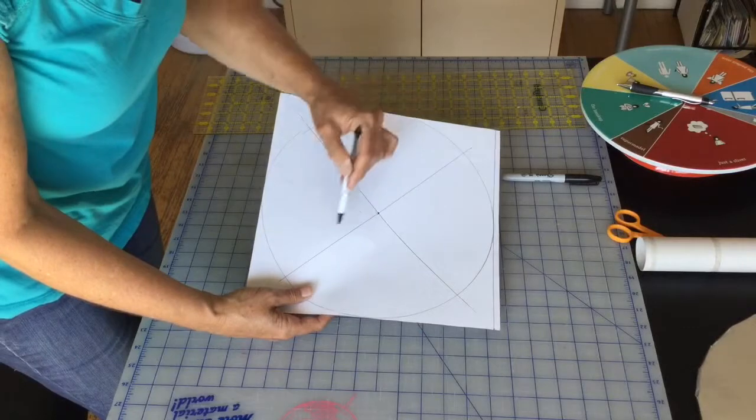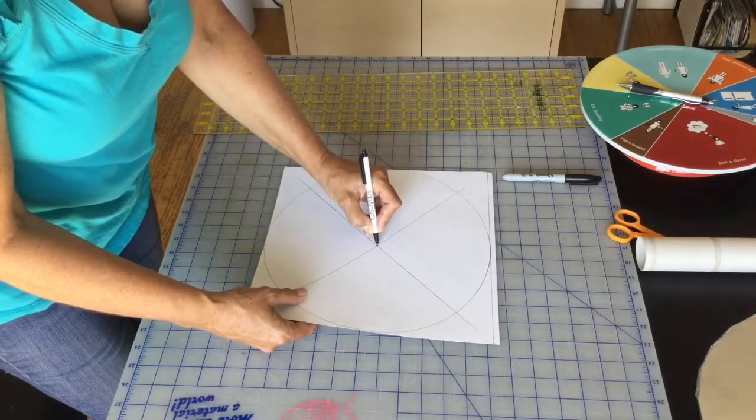And there you have it. Your cross section right in the middle of your circle. There's your middle.